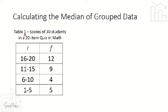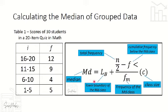For our first example, we have Table 1: scores of 30 students in a 20-item math quiz. The formula is: median equals L sub B plus N over 2 minus F less than, all over F sub M, times C.